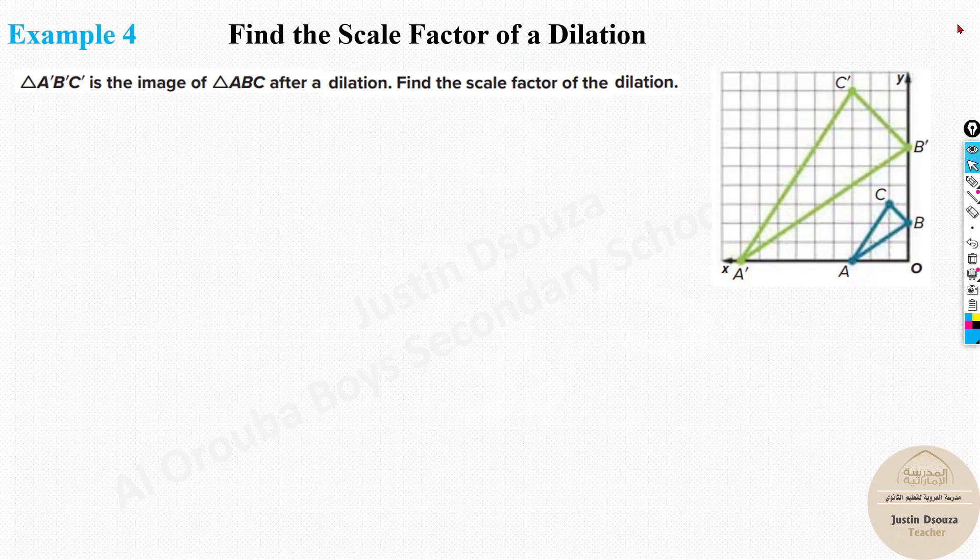Now we will remember, if you have watched the previous video, remember scale factor. In order to find it, you just divide the distances: the dilated image distance divided by the original image, that is the formula. Now if you know the value of K, the scale factor, you just take A dash B dash divided by A and B.